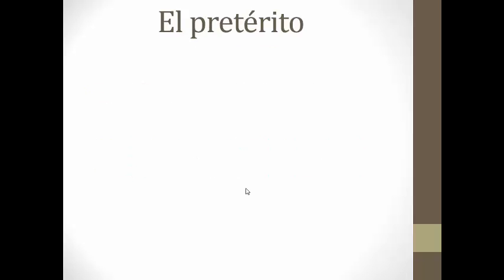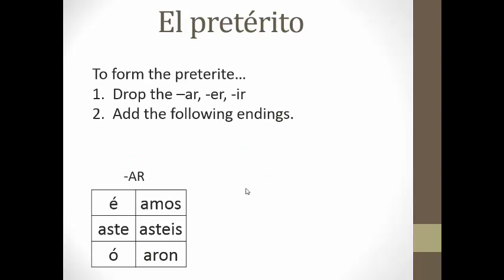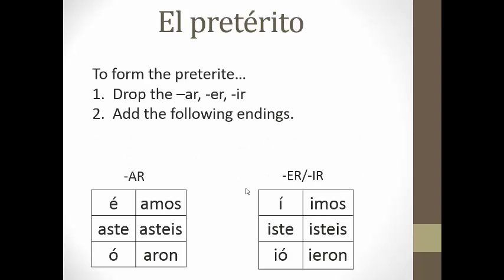To form the preterite tense, you've got two steps. First, you drop the ending — AR, ER, or IR — and then you add these endings. We all know our song that goes: AR preterite is: A, aste, o, a, mos, a, ron. And ER/IR forms are: I, iste, yo, y, mos, y, ron.